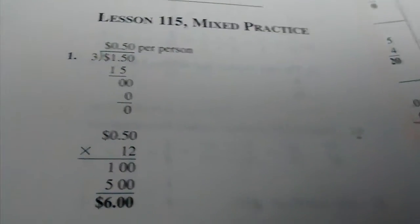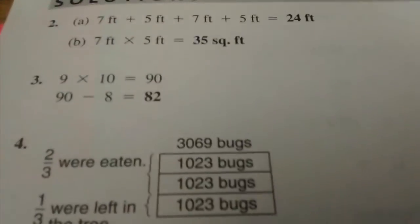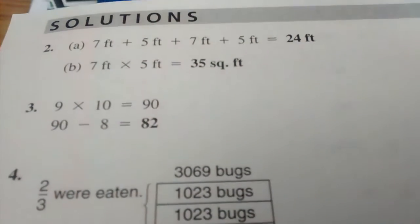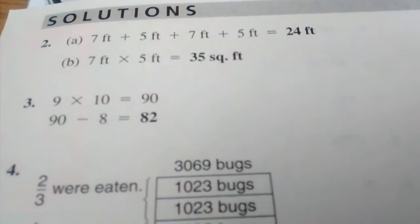115. Number 1, $6. Number 2, 24 feet, that's A, and B is 35 square feet.